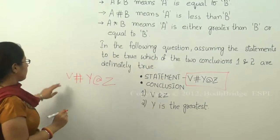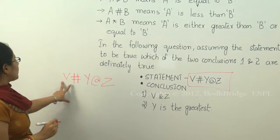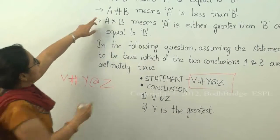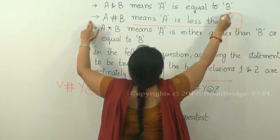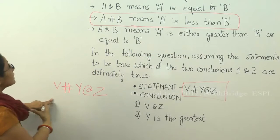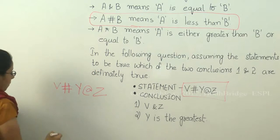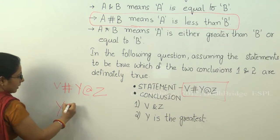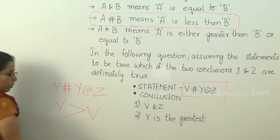Now we will see what does V hash Y mean. 'A hash B' means A is less than B. So V is less than Y. That means Y is greater than V.